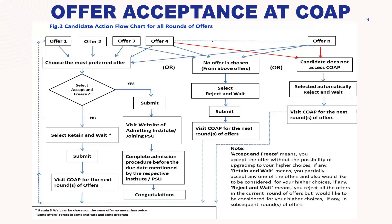On day one, if you are getting N offers — offer 1, offer 2, offer 3, and so on — and you are getting two, three, or more options on day one, then you have these choices. If you want to accept a preferred offer and you have a good rank and are getting your desired preference, then you can simply make this offer freeze.